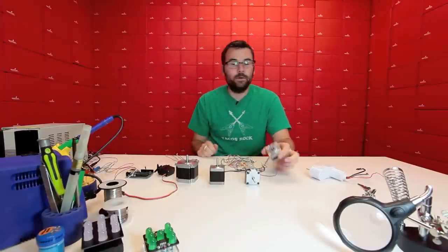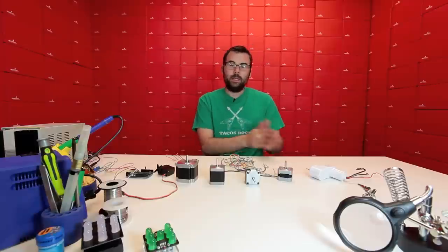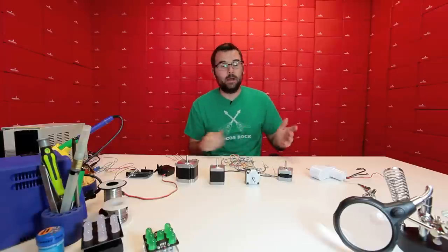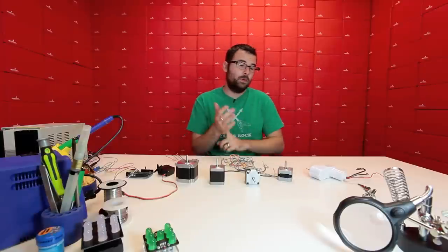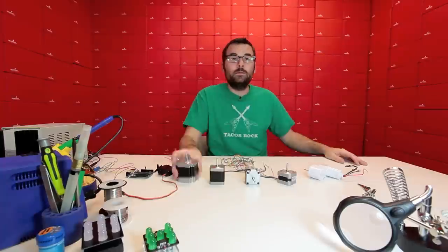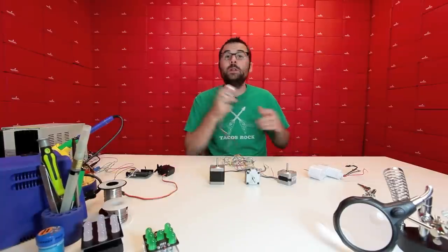So a servo, for instance, goes only like, let's say, 90 degrees or 180 degrees back and forth. These are continuous and you can control the speed and the number of steps. Let's take one of these apart and see what it looks like on the inside.